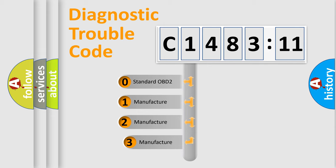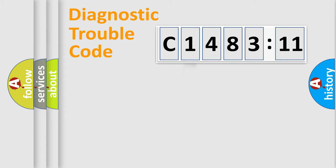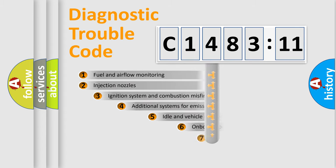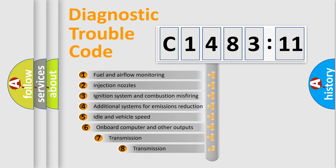This distribution is defined in the first character of the code. If the second character is expressed as zero, it is a standardized error. In the case of numbers 1, 2, or 3, it is a more specific expression of the car-specific error.